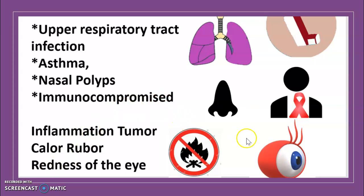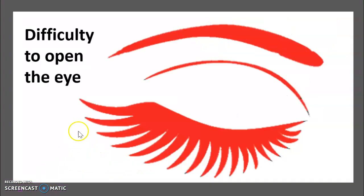Because it is a case of inflammation, there are the cardinal signs of inflammation: tumor, color, dolor, and redness of the eyelid. There is difficulty opening the eye. However, movements of the eye are not limited.